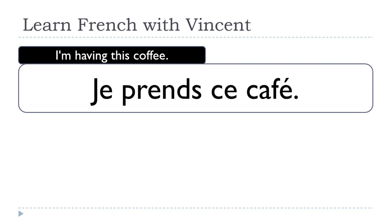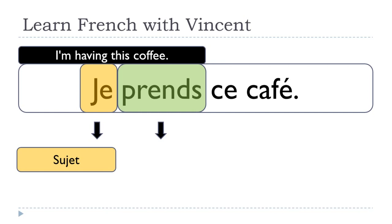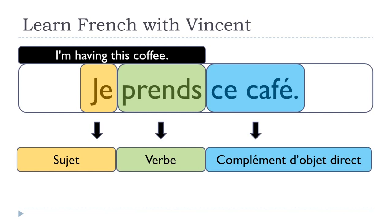Let's see another sentence: JE PRENDS CE CAFÉ — I'm having THIS coffee. The difference from the previous sentence is that instead of the definite article LE, we have the adjective démonstratif CE, the masculine form, because CAFÉ is masculine. But CE CAFÉ is still the COMPLÉMENT D'OBJET DIRECT.